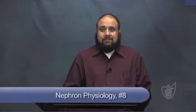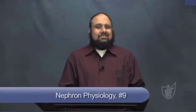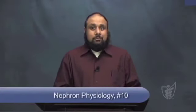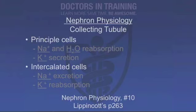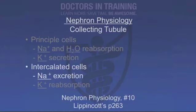The distal convoluted tubule is where about 10% of sodium chloride is reabsorbed via the NCC transporter — a sodium and chloride transporter. Parathyroid hormone also acts in the distal convoluted tubule to reabsorb calcium. Finally, the filtrate enters the collecting tubule. There are two kinds of cells in the collecting tubule: principal cells and intercalated cells. Principal cells are primarily responsible for sodium and water reabsorption and potassium secretion. The intercalated cells are responsible for sodium excretion and potassium reabsorption.